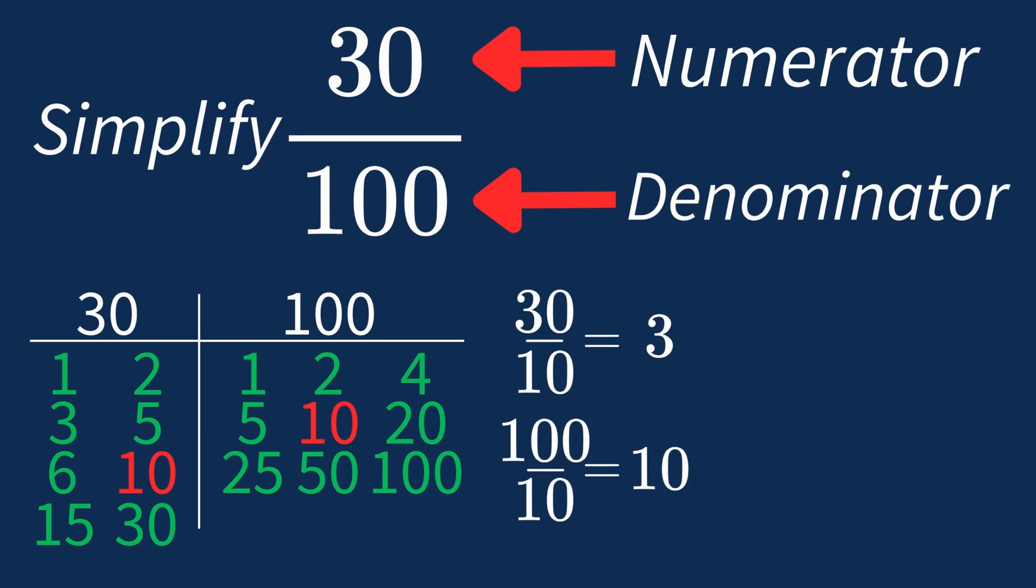So after dividing, the simplified fraction is 3 over 10. And we know that 3 over 10 is in its simplest form, because the only common factor between 3 and 10 is 1. And when 1 is the largest common factor, we know our fraction is already in its simplest form.